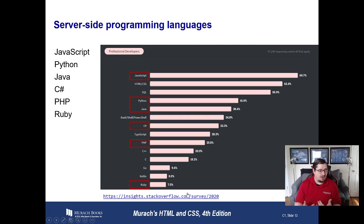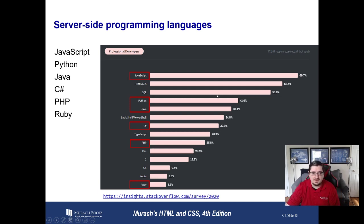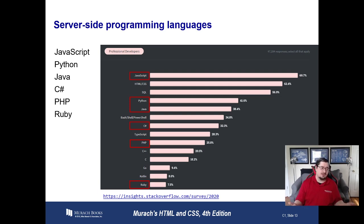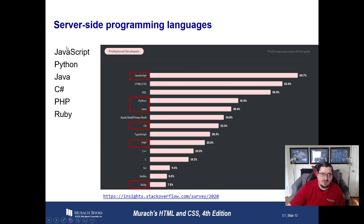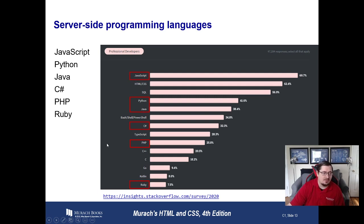Talking a little bit about the languages used on the back end — say we have an application server. The most popular ones are shown here from a Stack Overflow survey of what languages people are using, considering both front end and back end. What we're seeing a lot of is JavaScript being used by most developers, both front end and back end, with Python, Java, C#, PHP, and Ruby also being common back-end languages.